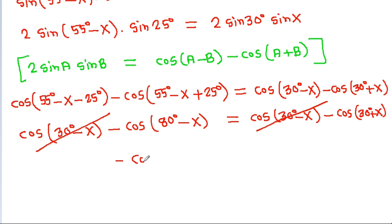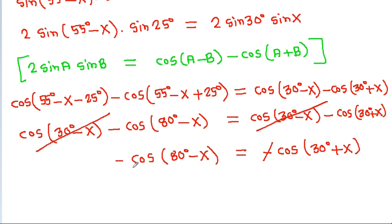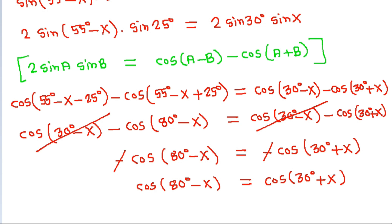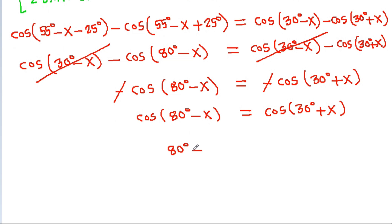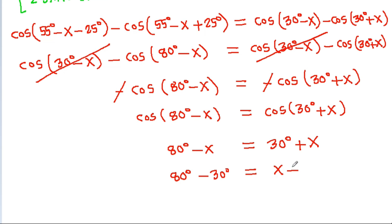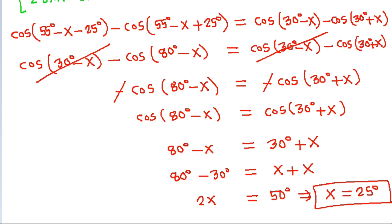So we get minus cos(80 degrees minus X) equals minus cos(30 degrees plus X), which means cos(80 degrees minus X) equals cos(30 degrees plus X). Therefore 80 minus X equals 30 plus X, giving 50 equals 2X, so X equals 25 degrees. Thank you.